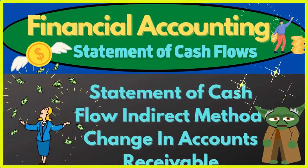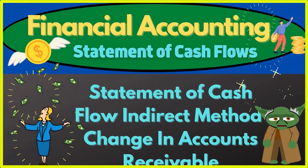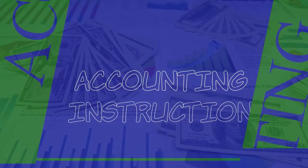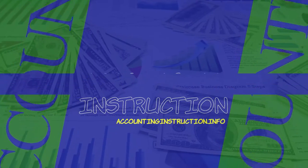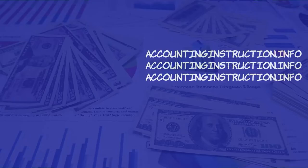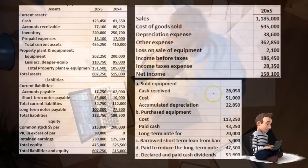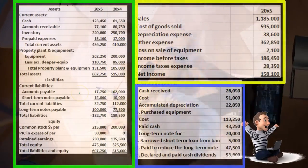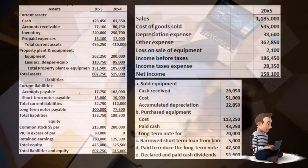In this presentation, we will continue putting together the statement of cash flows using the indirect method, focusing here on the change in accounts receivable. The information will be a comparative balance sheet, the income statement, and some added information. We will be focusing in on a worksheet that was composed from the comparative balance sheet.